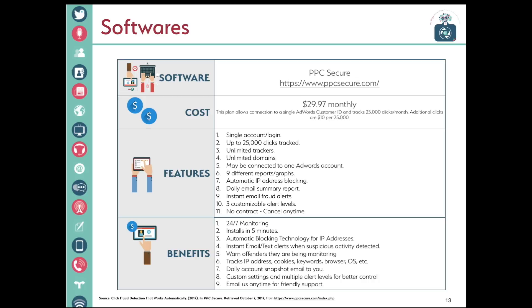Another solution is software called PPC Secure. This one costs $29 per month, but that covers only up to 25,000 clicks — it will cost an additional $10 for clicks beyond 25,000. The features include one account, unlimited trackers, unlimited domains, and reports. There is no contract and you can cancel at any time. The benefits include 24/7 monitoring, only 5 minutes to install, and it keeps track of IPs, cookies, keywords, and browsers. If you have any problem, you can email them at any time.